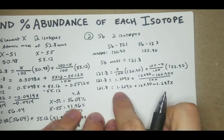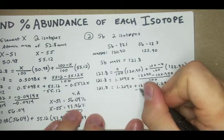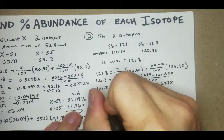121.8 equals 1.209X plus 122.90 minus 1.229X divided by 100. Now we have the exponents and the whole numbers. Numbers we're just going to get rid of, put them all on one side.